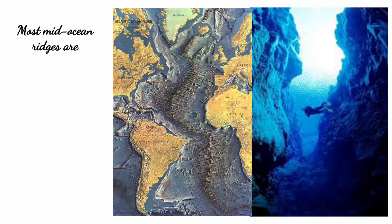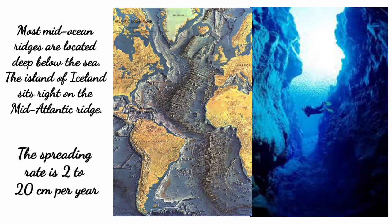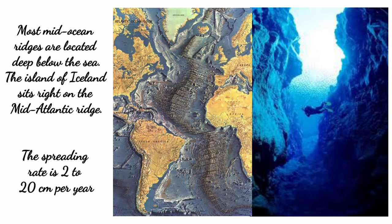Most mid-ocean ridges are located deep below the sea. The island of Iceland sits right on the Mid-Atlantic Ridge. The spreading rate is 2 to 20 centimeters per year.